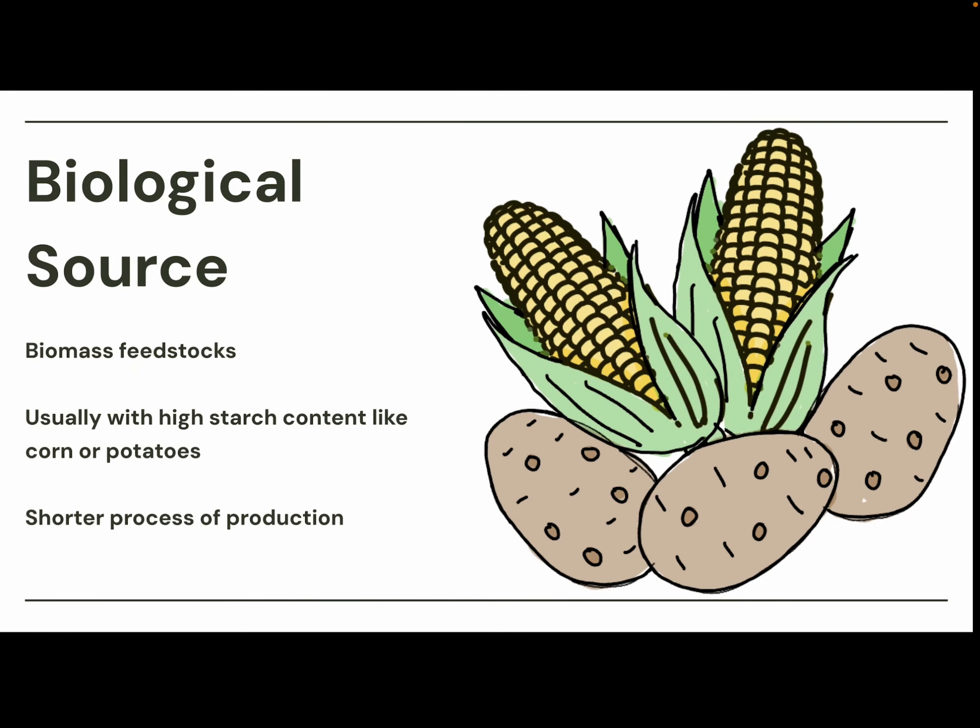Its biological source is from biomass feedstocks, usually with high starch content like corn or potatoes. If it has a higher concentration of starch, it makes for a shorter production process because more ethanol can be extracted from it.